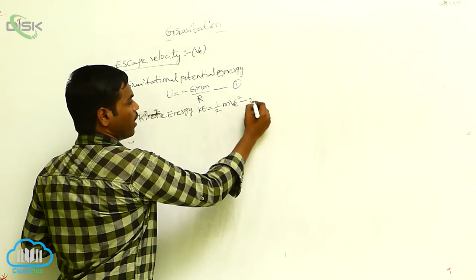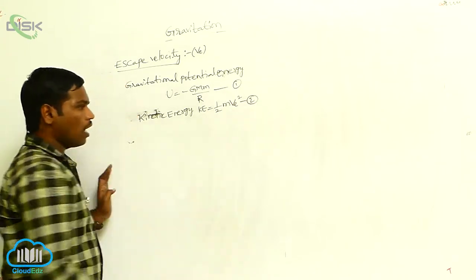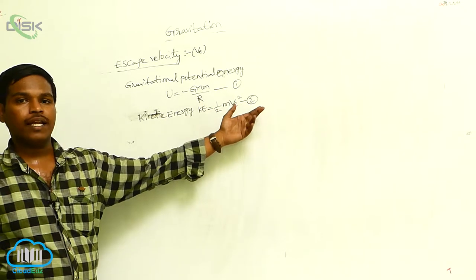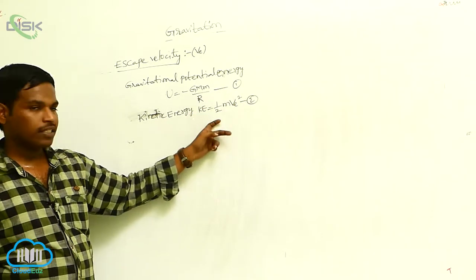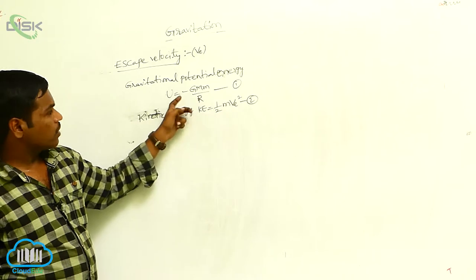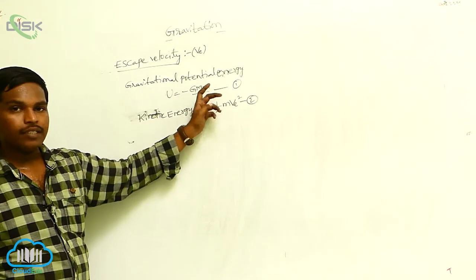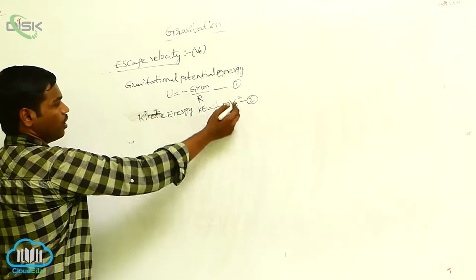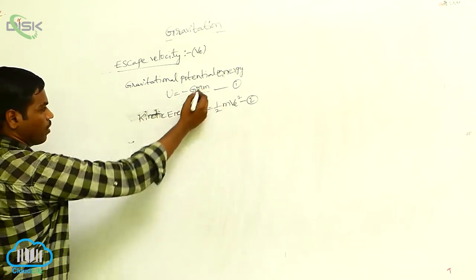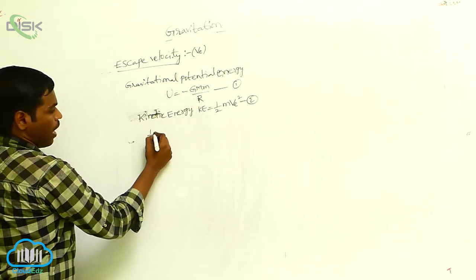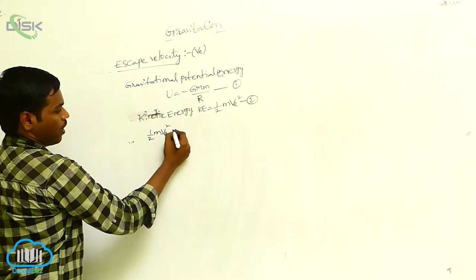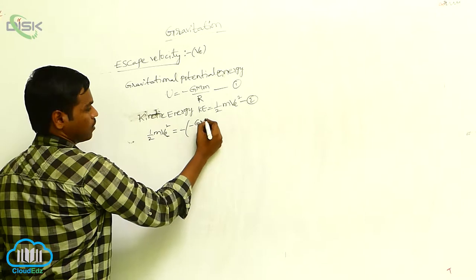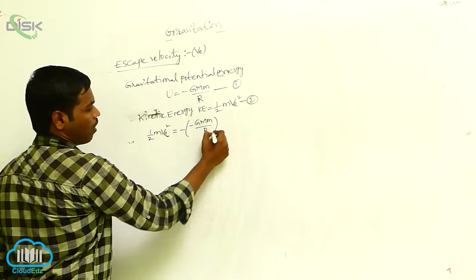These two energies are equal, acting in the opposite direction — the kinetic energy and the gravitational potential energy. Then these two equations are equal: half M·Ve² is equal to minus half, that is minus GM·m by R.